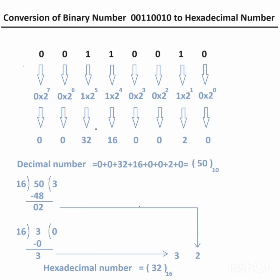Hello. Conversion of binary number 00110010 to hexadecimal number. First of all, we will convert this binary number to decimal number, and the decimal number equivalent to this binary number is equal to 50.